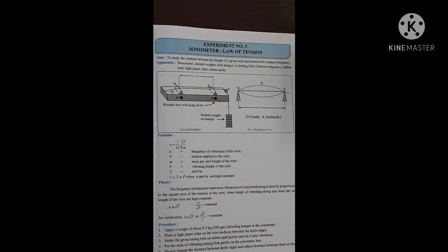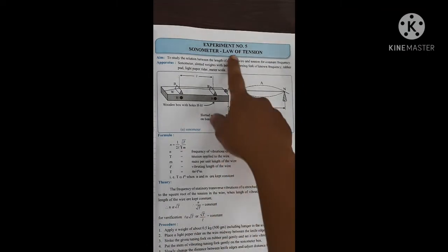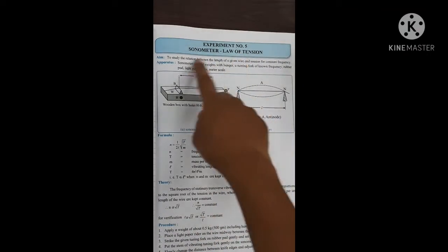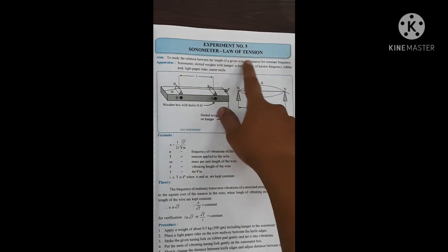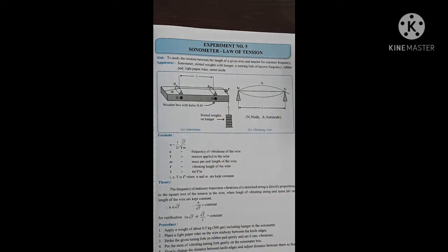We are going to study experiment number 5: Sonometer Law of Tension. The aim is to study the relation between the length of the given wire and the tension for a constant frequency.